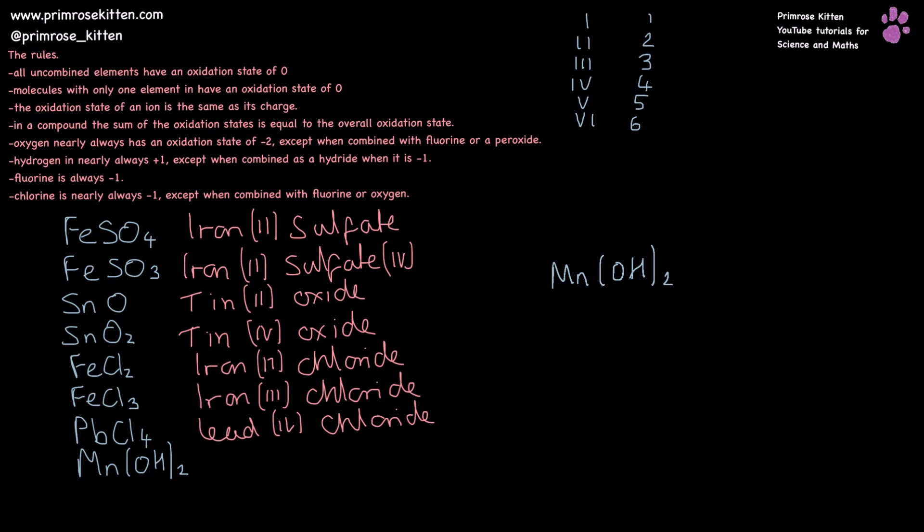Manganese hydroxide here. We have a hydroxide ion. The overall charge on a hydroxide ion is minus one. You should know your ions. There are two of them, giving us minus two as the overall charge, which means manganese has to be contributing plus two, making this manganese(II) hydroxide.